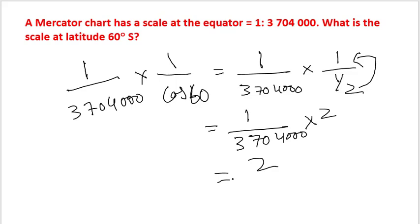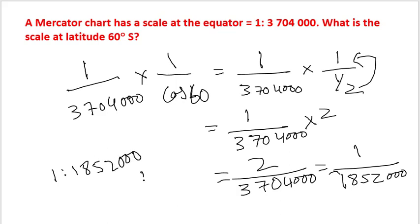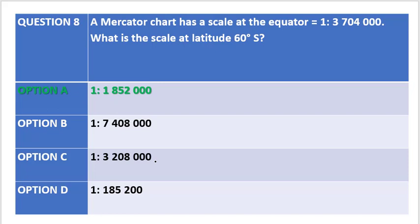So 2 divided by 3,704,000 gives us a ratio of 1:1,852,000. So our answer is option A, which is the exact figure given as option A.